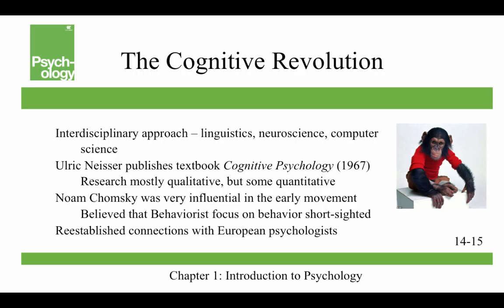The cognitive revolution is an interdisciplinary approach involving linguistics, neuroscience, and computer science. Ulrich Neisser published his book Cognitive Psychology in 1967. Noam Chomsky was very influential in the early movement — he's a linguist who believed the behaviorist focus on behavior was short-sighted, and that we'd have to reincorporate mental functioning and language into psychology. The cognitive psychologists also reestablished connections with European psychologists. The picture is of Nim Chimpsky, part of cutting-edge 1970s research to teach chimpanzees American Sign Language — he learned around 200 signs, but the experiment was considered a failure. They named him after Noam Chomsky.